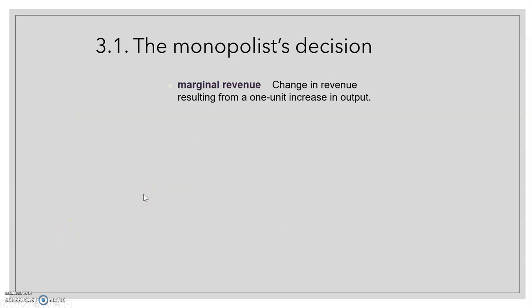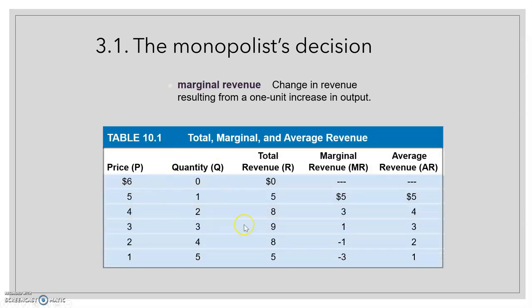The monopolist's average revenue is the price it receives per unit, so it is just the market demand curve. Let's consider a firm whose demand curve is P = 6 − Q, as shown in this table from the Pindyck book. This table shows the price, the quantity, the total revenue in the third column, and the marginal revenue and average revenue computed from the previous columns.